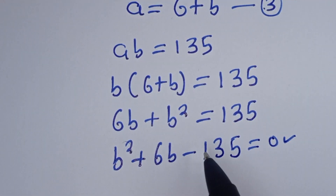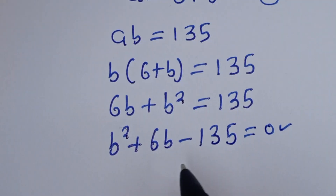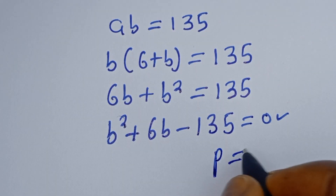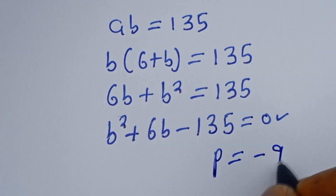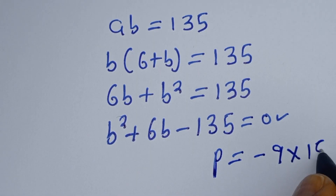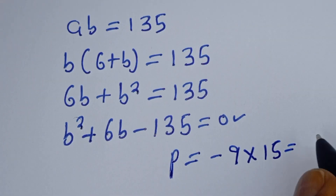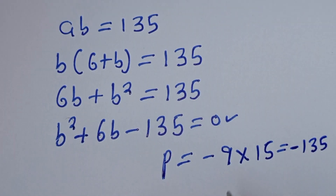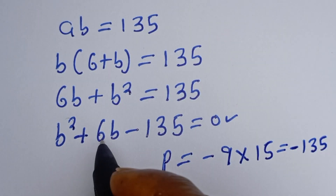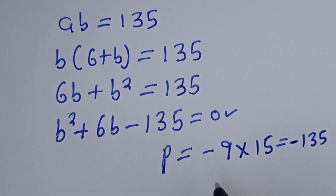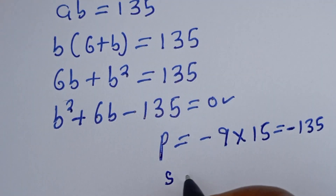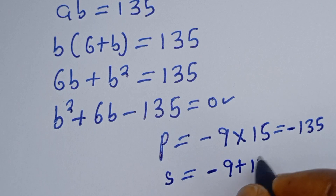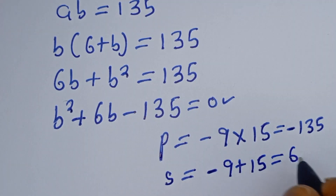But in this case, I am going to make use of the factorization method. The product is minus 135: minus 9 multiplied by 15 is equal to minus 135. Then we have the sum which must equal 6: minus 9 plus 15 is equal to 6.